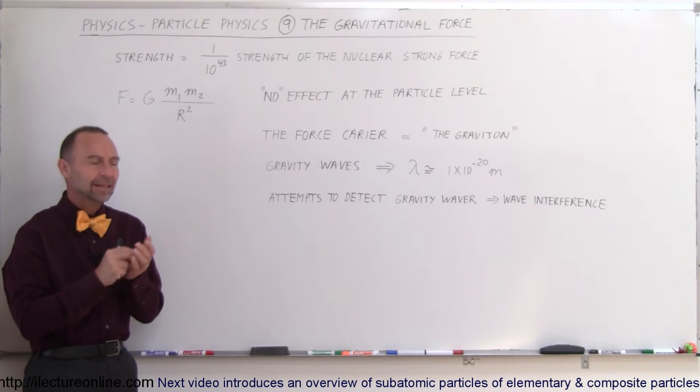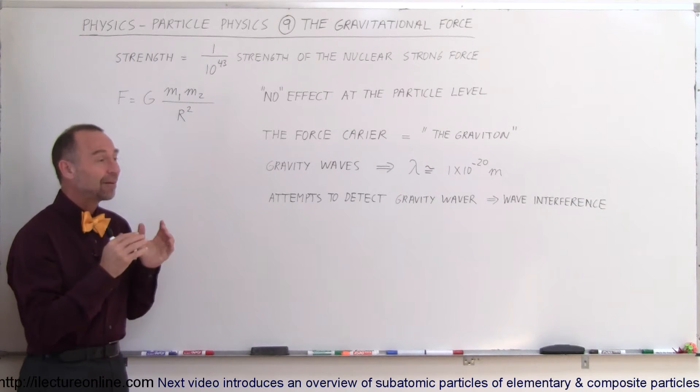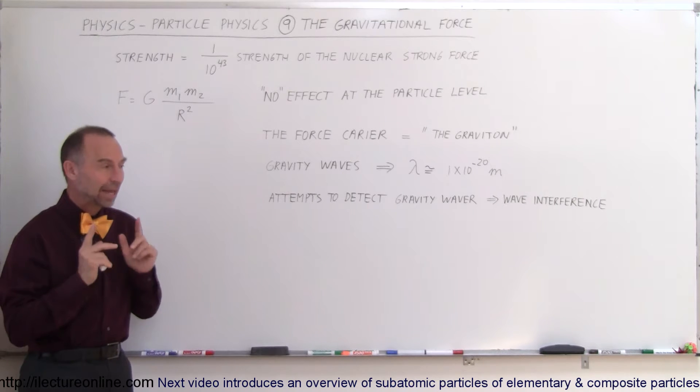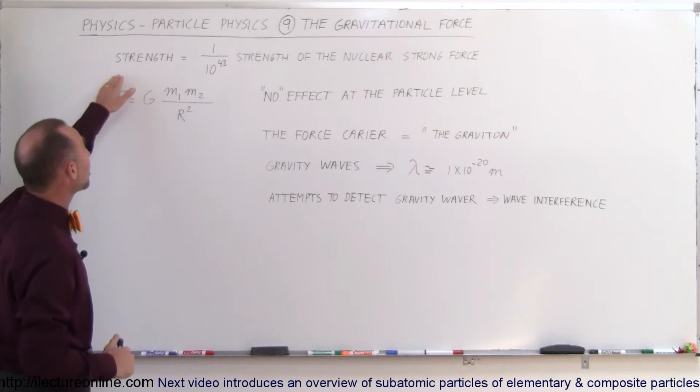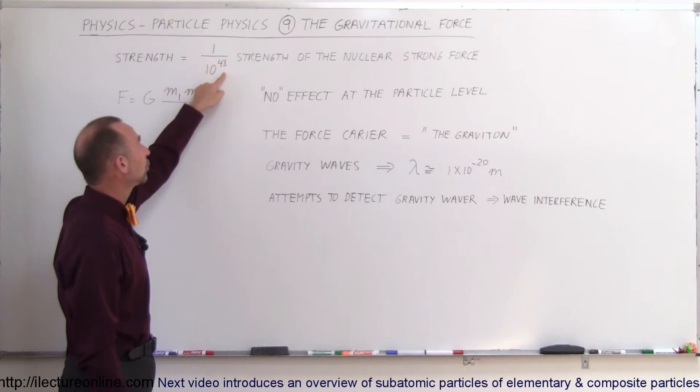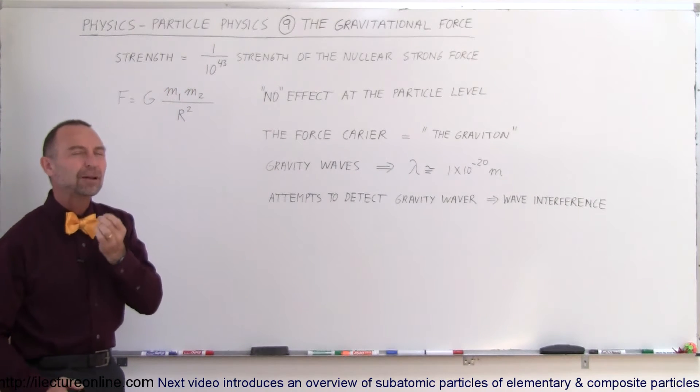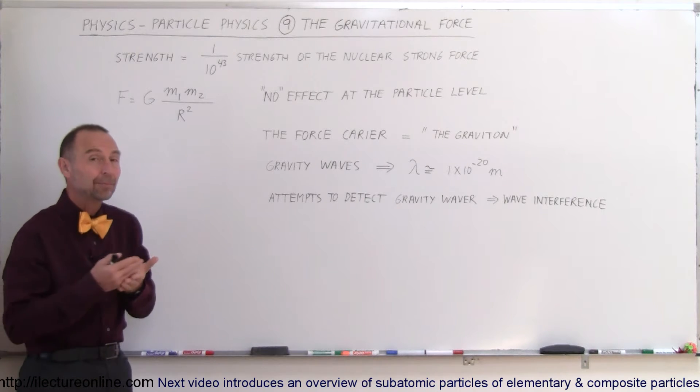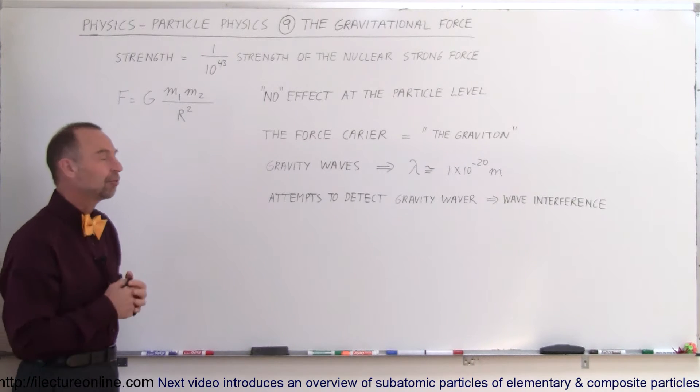But at the quantum mechanical level, at the subatomic level, gravity has very little influence. The reason for that is it's a very weak force. The strength of the gravitational force is 1 over 10 to the 43rd the strength of the nuclear strong force. It's minute. It's also very weak compared to the electromagnetic force.